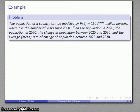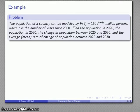We can take a look at a couple of examples. Let's say I have the population of a country modeled by P(t) = 150e^(0.03t) million persons, where t is the number of years since 2000. We might find the population in 2020 and in 2030, the change in population, and the average mean rate of change between the two years.